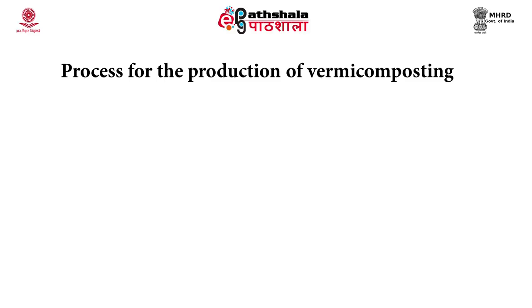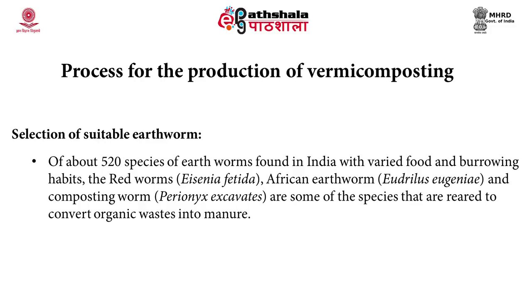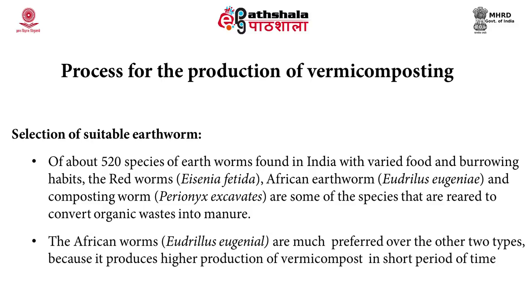For the production of vermicompost, the foremost step is the selection of a suitable earthworm out of about 500 species found in India with varied food and burrowing habits. The red worm Eisenia foetida, the African earthworm Eudrilus eugeniae, and the composting worm Perionyx excavatus are species used to convert solid waste into vermicompost. The African worm is much preferred over the other two species because it produces a high quantity of vermicompost in a short period of time.